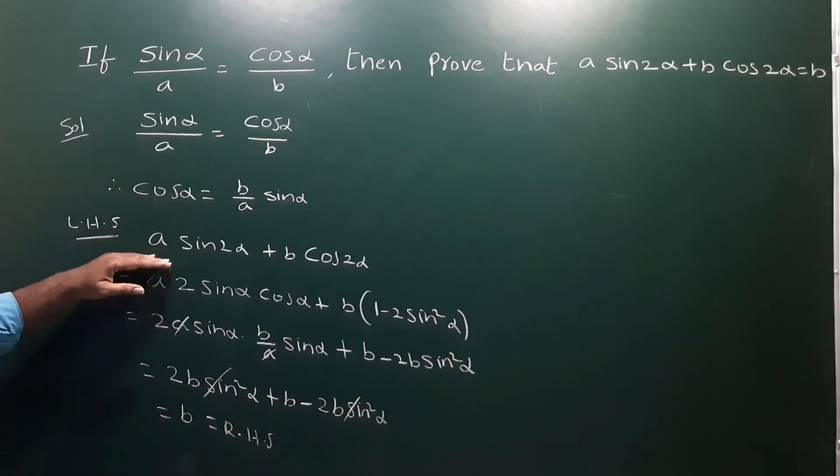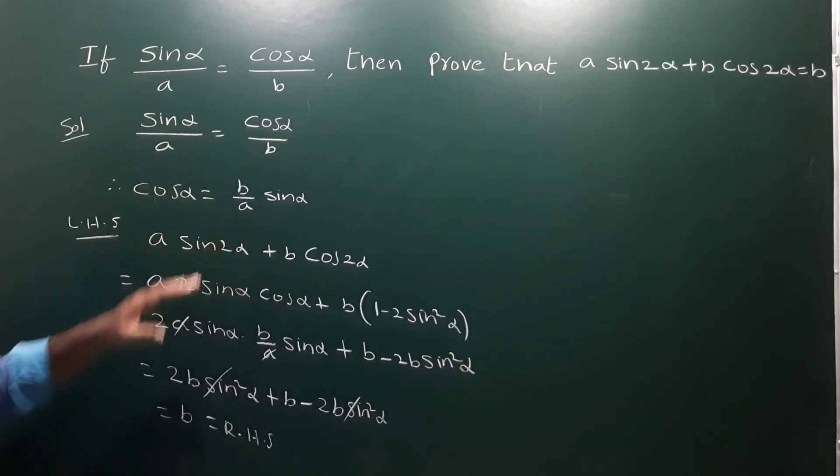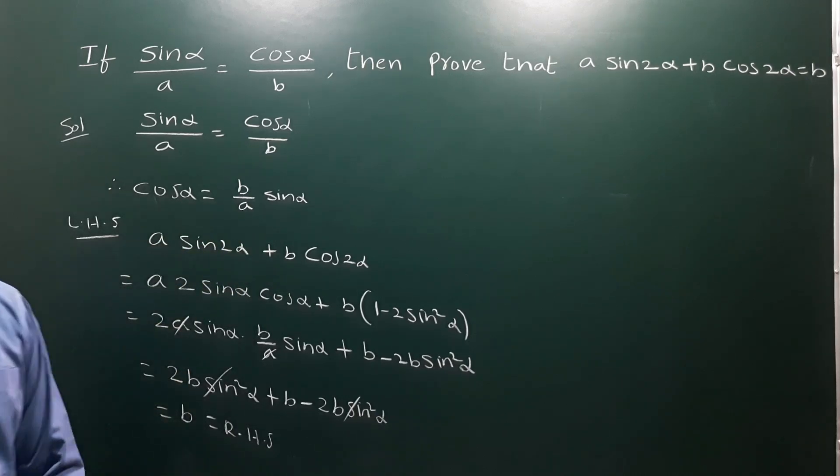Therefore, a·sin2α + b·cos2α is equal to b. That is the answer.